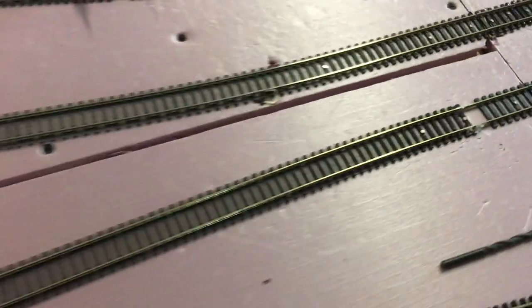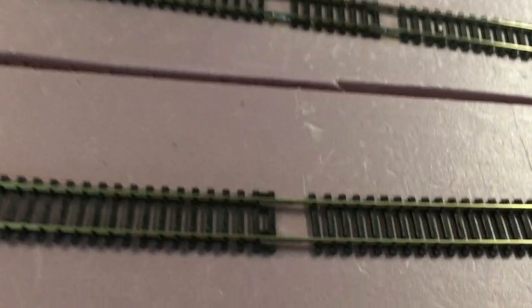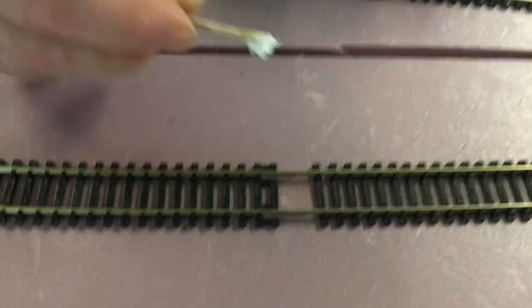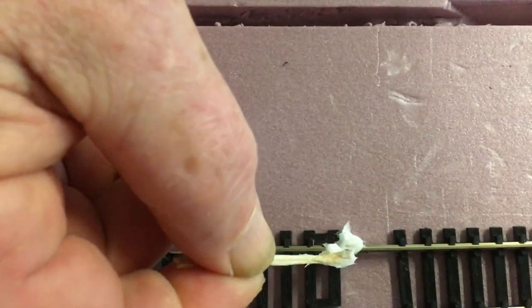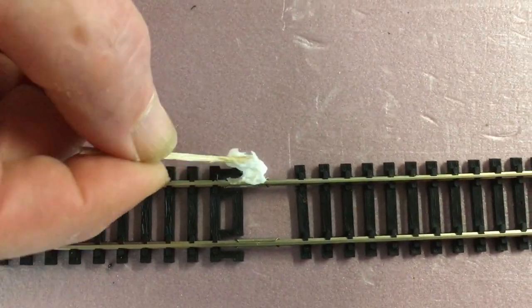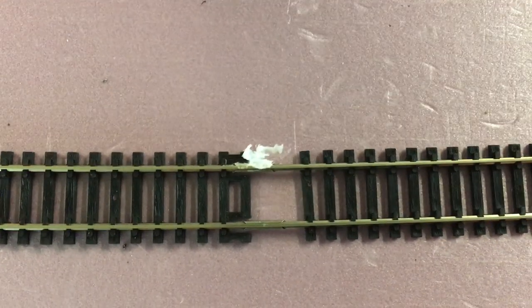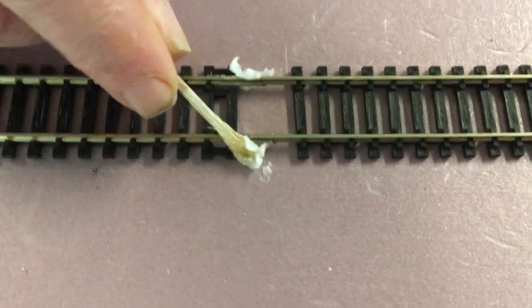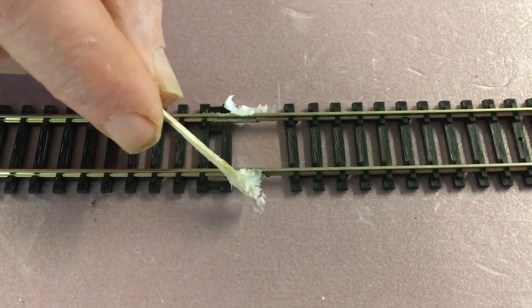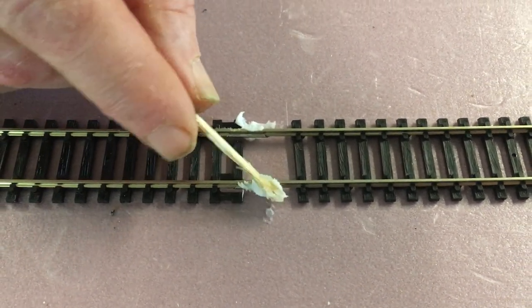Now we're going to do the other rail here, the other section. I'm going to put some right here. And because it's water-based, it will dissipate quickly. A little bit extra won't hurt it. I'm going to put some right here on this side. We're good there.